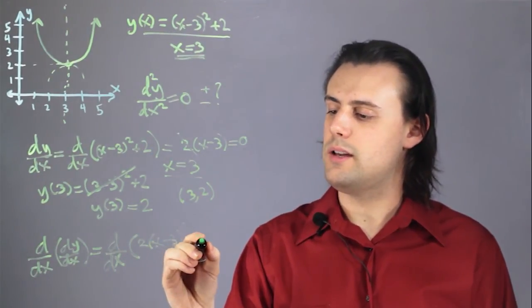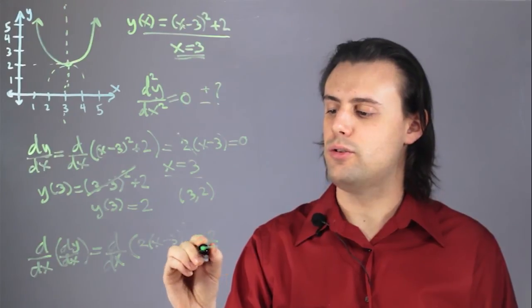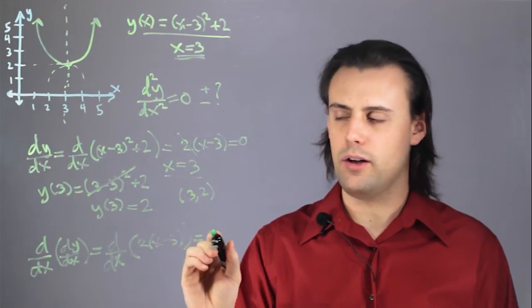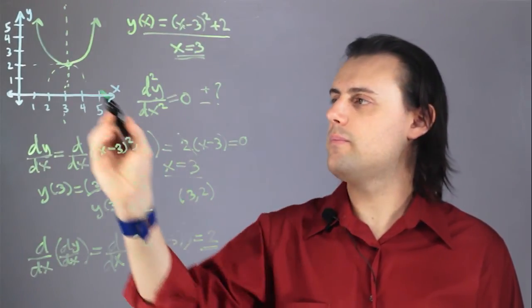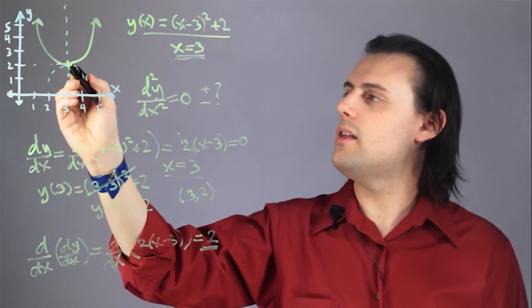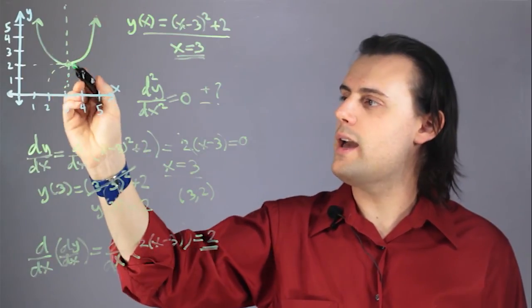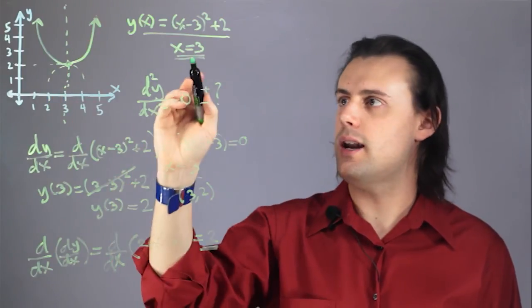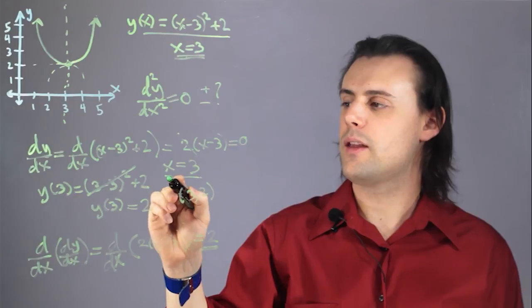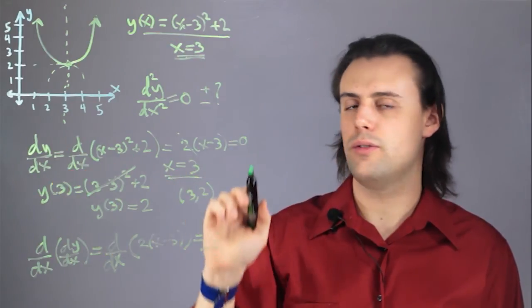...and that's going to be equal to just positive 2. So because it's positive, I know it's a minima, and that means that my curve will only increase away from the line of symmetry at x equals 3, where the first derivative was equal to 0.